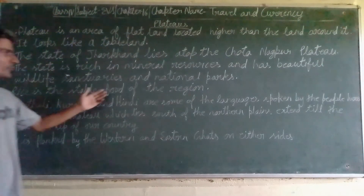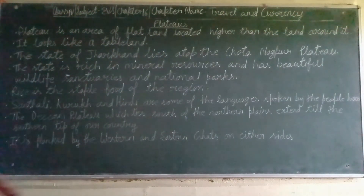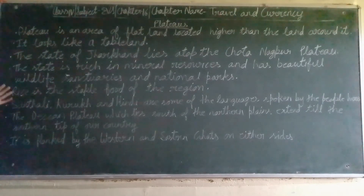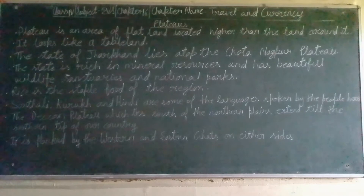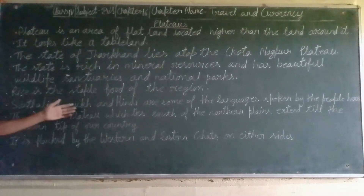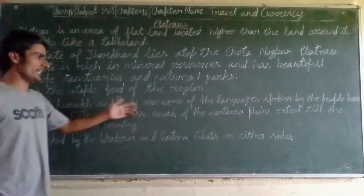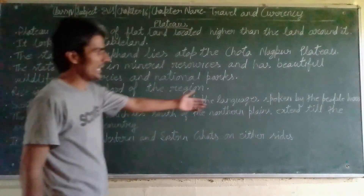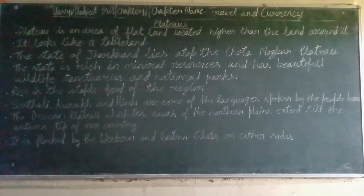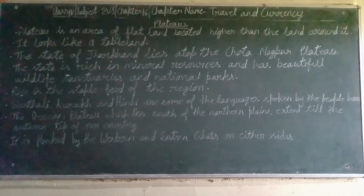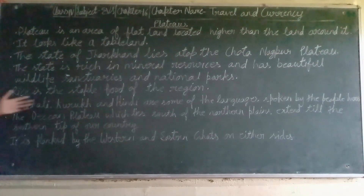Rice is the staple food of the region. Here the main crop is rice, so here the people use rice as their staple food. Santhali, Kurukh, and Hindi are some of the languages spoken by the people here. The people who live in Jharkhand mainly use these languages — Santhali, Kurukh, and Hindi.